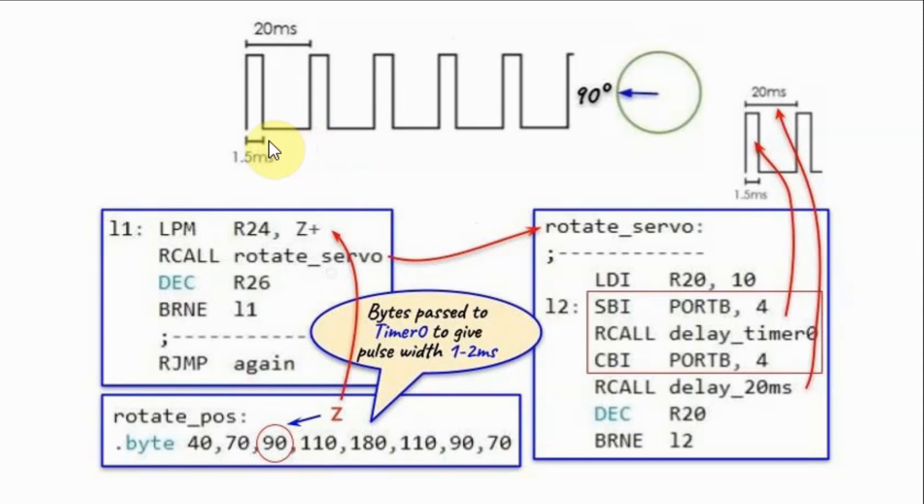As an example, let's say the program wants to generate this pulse width modulated signal, so as to move the servo to position 90 degrees. Pointer Z is now pointing to this byte, which is the byte needed to give us a delay of 1.5 millisecond through timer 0. This byte is loaded into register R24, and then we call the subroutine rotate servo.